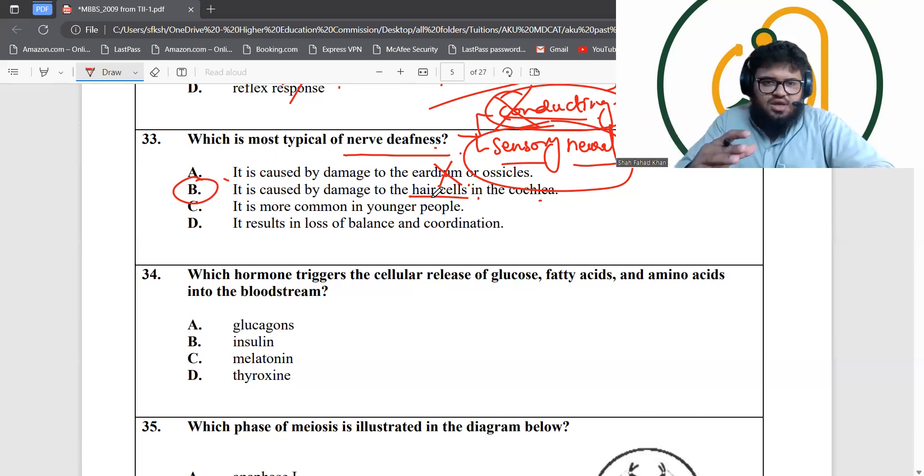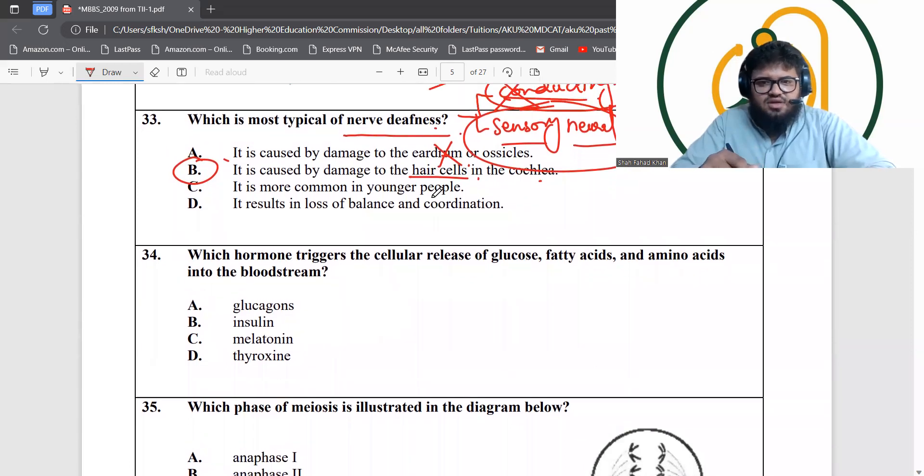Question 34, which hormone triggers cellular release of glucose, fatty acids, amino acids into your bloodstream? This is a tricky question. If someone looks at glucose, that's not the answer, actually glucagon is incorrect. You have to look at the entire question about glucose, fatty acids, amino acids. It's actually an overall increase in the metabolism, a catabolic reaction. For the catabolic reaction to increase and metabolism to increase, thyroxine or thyroid hormone is required.